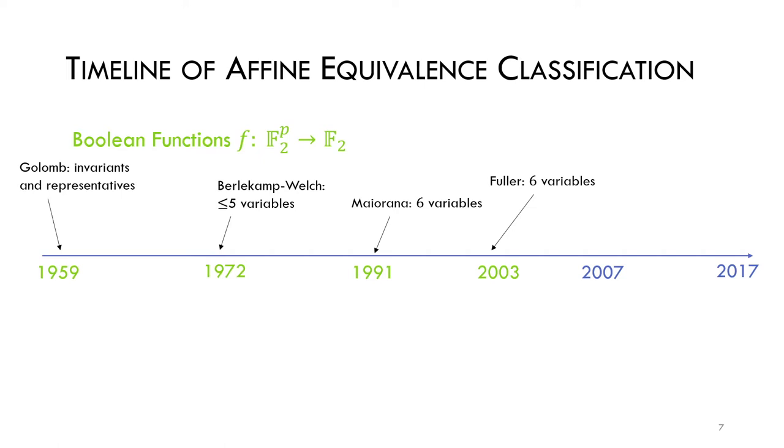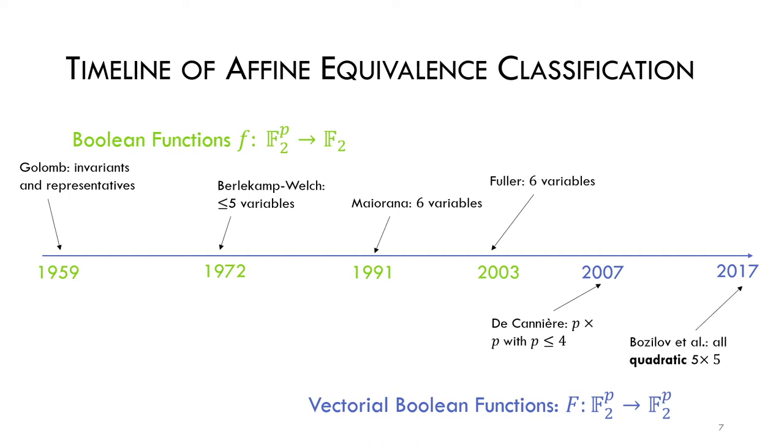When it comes to vectorial Boolean functions, De Cannière demonstrated an exhaustive classification of bijective p by p S-boxes for p up to four. But this methodology was not feasible for larger S-boxes. In 2017, Bozilov et al. restricted their work to only quadratic functions and managed to classify them for five inputs.